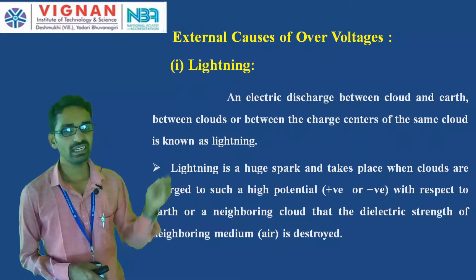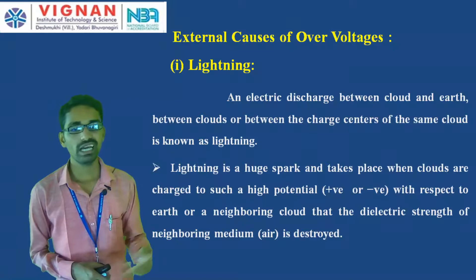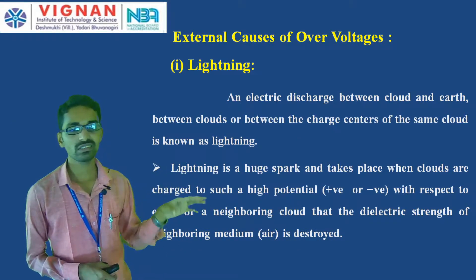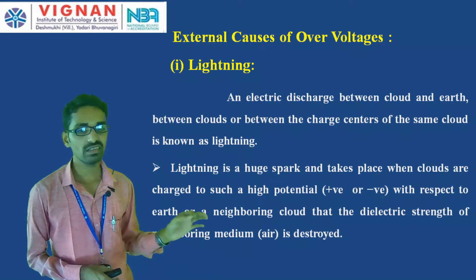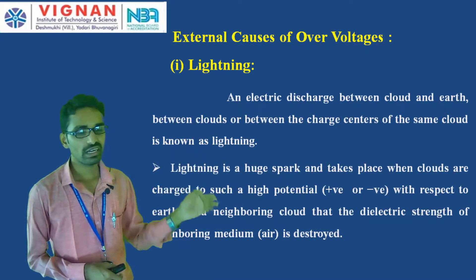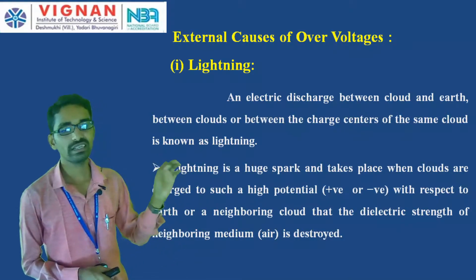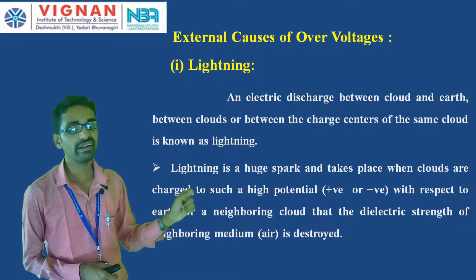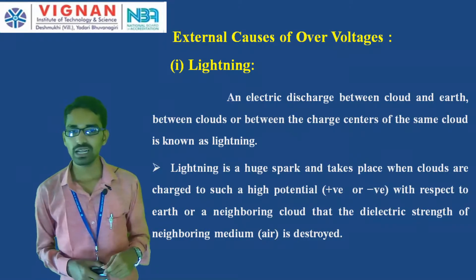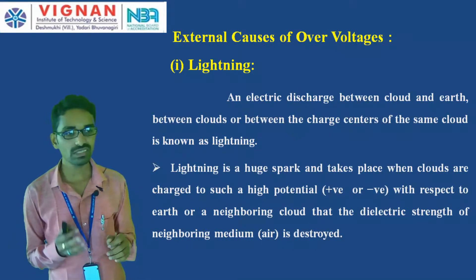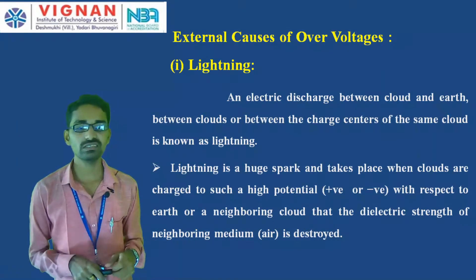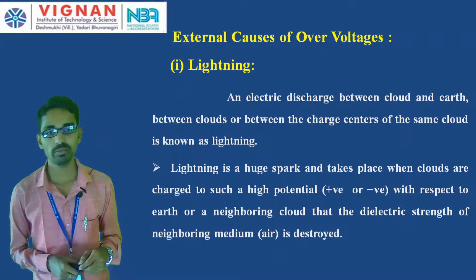Lightning is a huge spark that takes place when clouds are charged to such a high potential — either positive or negative — with respect to earth or a neighboring cloud, such that the dielectric strength of the neighboring medium is destroyed. The dielectric medium between the earth and cloud is air, and when that air's dielectric strength is destroyed, the lightning reaches towards the earth.